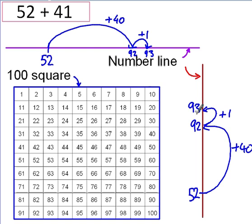And on a 100 square, it looks like this. 52 is here. Add 40. 10, 20, 30, 40. Only kidding. I need to add another one until I get to 93.